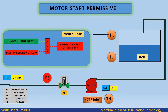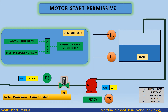Motor start permissive control logic example: if valve V1 is full open but inlet pressure is low, permit to start motor is not ready. However, if valve V1 is full open and inlet pressure is not low — both pre-conditions satisfied — then permit to start motor is ready.